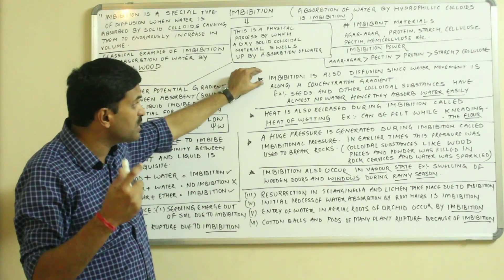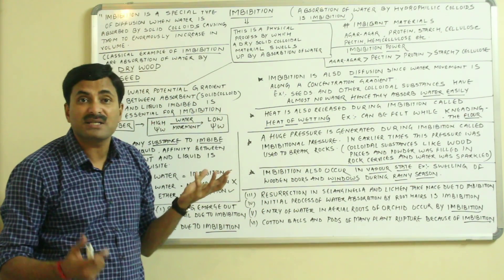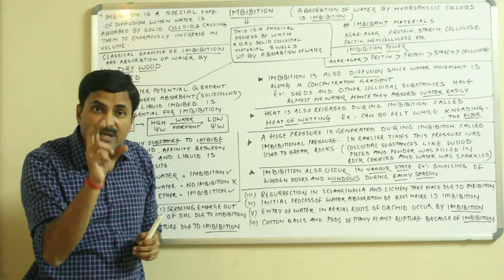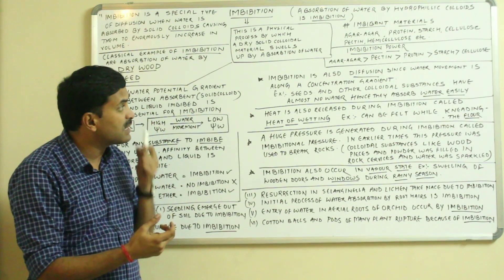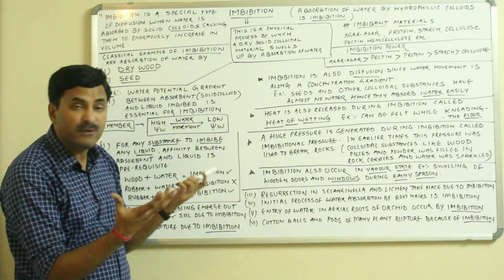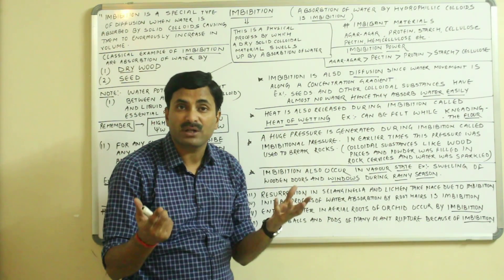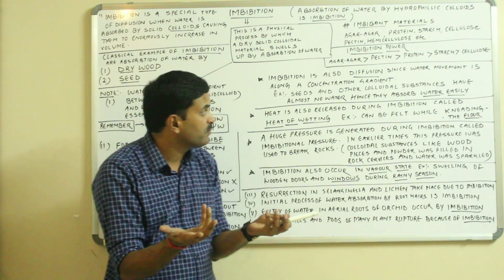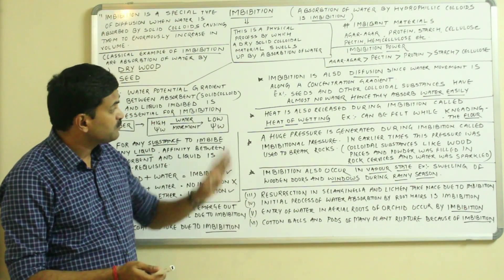Imbibition is also a form of diffusion. Imbibition is a diffusion because water movement occurs along a concentration gradient, just like in diffusion. Seeds and other dry colloidal substances have almost no water, so water is absorbed into them due to this concentration gradient. That is why imbibition is considered a process of diffusion.